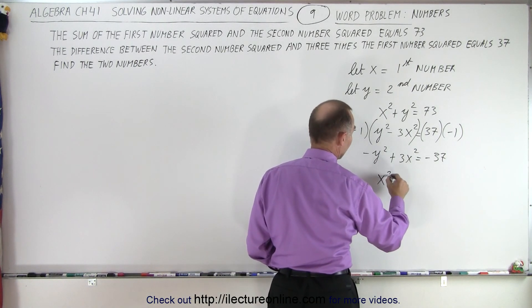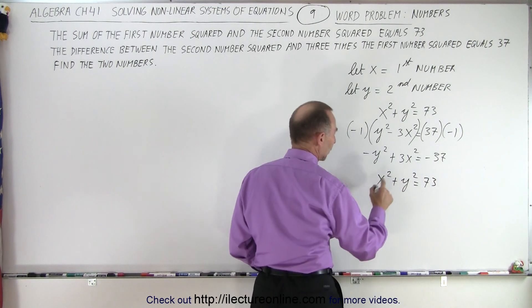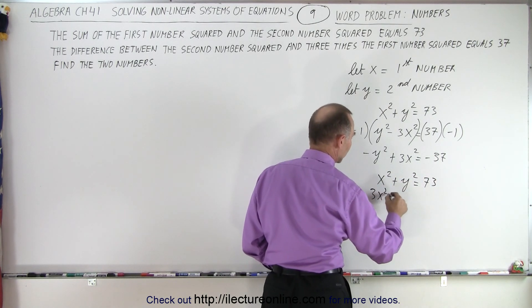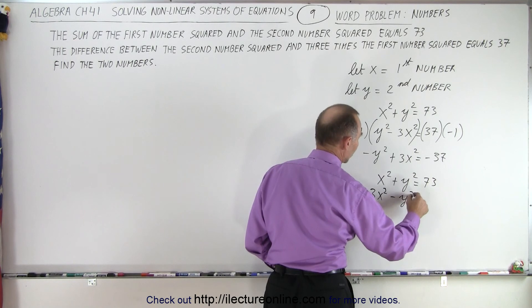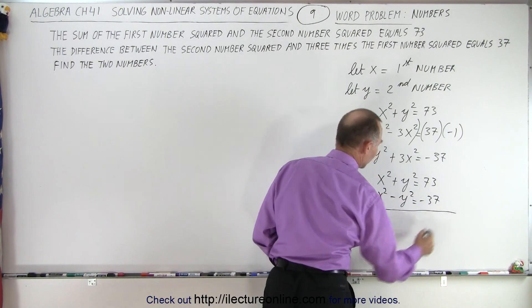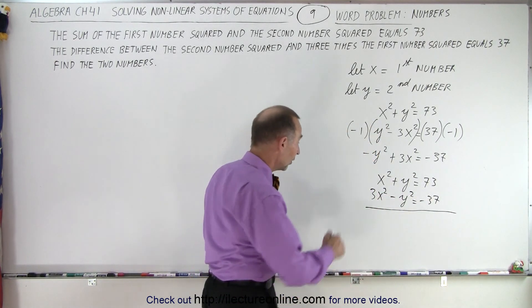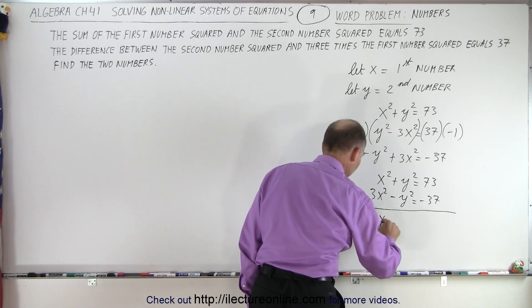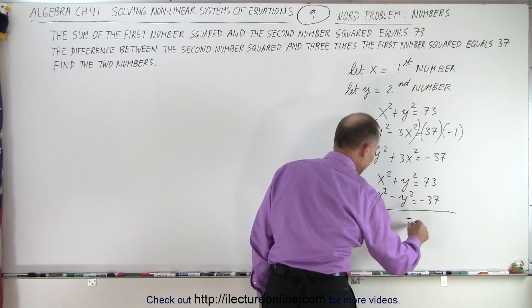So let's rewrite them. We have x squared plus y squared equals 73. And then we have 3x squared minus y squared equals a negative 37. So notice if we now add those two equations, here we get 4x squared. The y's drop out.